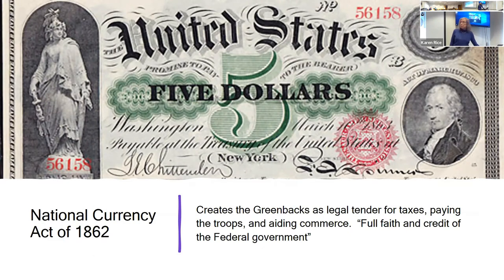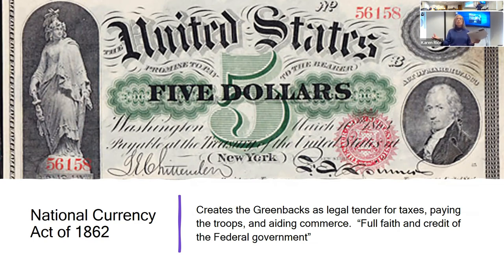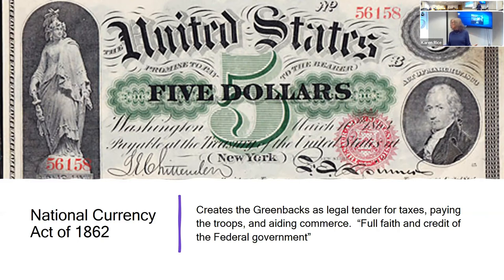What Lincoln and Congress proceed to do is create the greenbacks from the National Currency Act. They can't be used for everything — tariffs are still paid in gold or silver — but greenbacks could be used for taxes, for paying the troops, and for aid of Congress. The economic experts and opponents all thought this would be a disaster no one would accept. But it wasn't true — it was seen as a patriotic act to create this new currency.